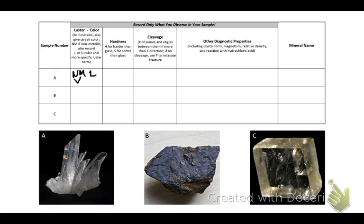We perform a scratch test on the mineral and discover that it has a hardness greater than glass, so you would write H. We look at the mineral closely and discover that it has no cleavage planes, but rather has fracture planes, so we would write F for fracture under cleavage. Upon further examination, we discover that the mineral exhibits conchoidal fracture, and that the mineral has a hexagonal crystal habit.